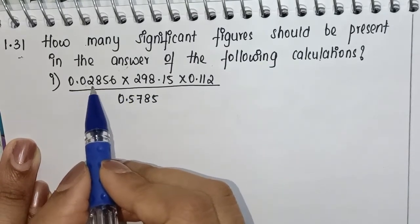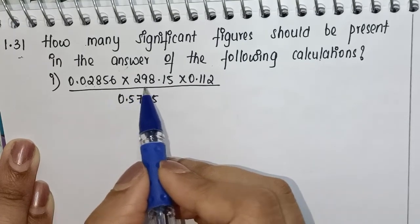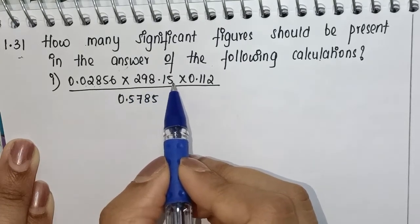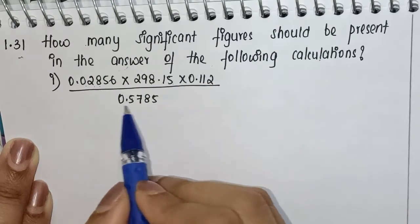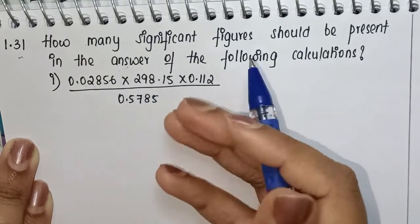Here we have a simple problem: 0.02856 × 298.15 × 0.112 divided by 0.5785. Once you solve this, whatever answer you get, how many significant figures are there? That's what we're going to find out.